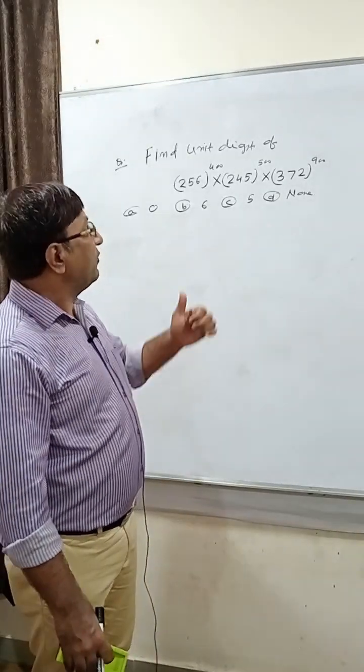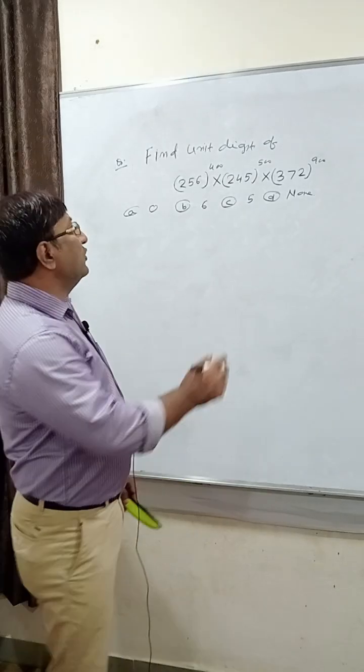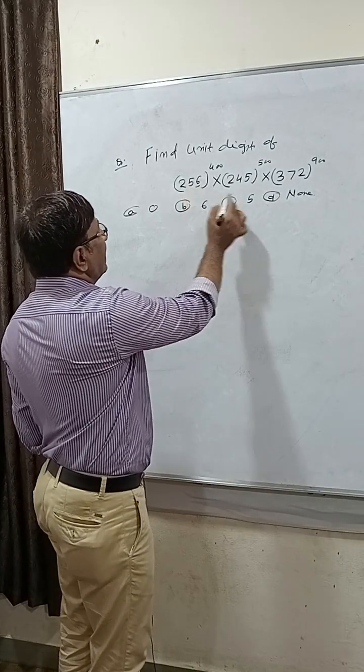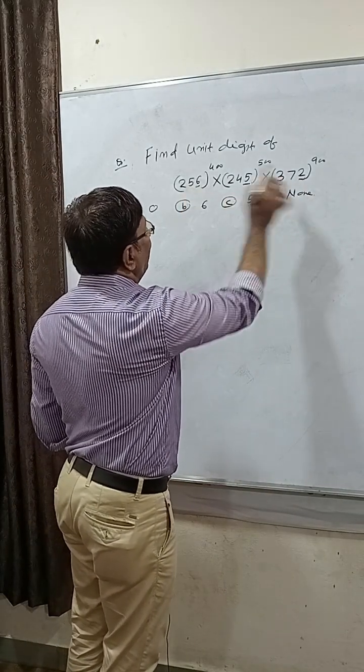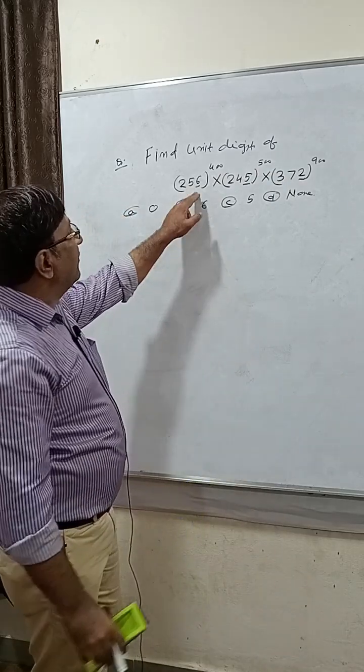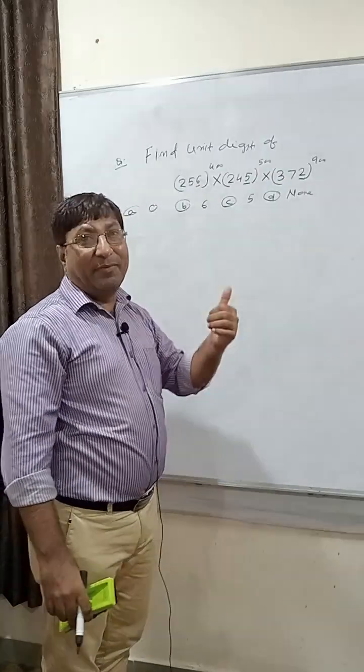We have to find unit digit, so focus on unit only. Here unit is 6, here unit is 5, here unit is 0. You know if you multiply 6 any number of times, you will get what? 6. So whatever power is given, no problem, you will get here 6.